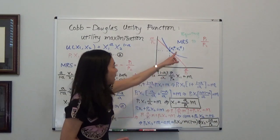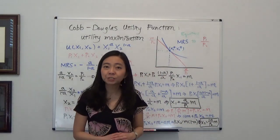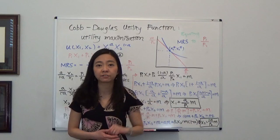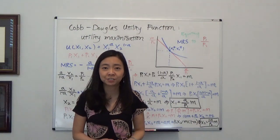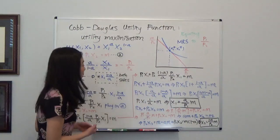So how do we do that? In our last video, we already talked about how to find the marginal rate of substitution of a Cobb-Douglas utility function. Now I hope you have already watched that.